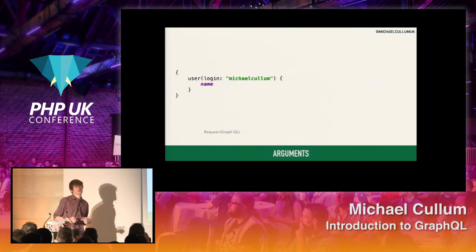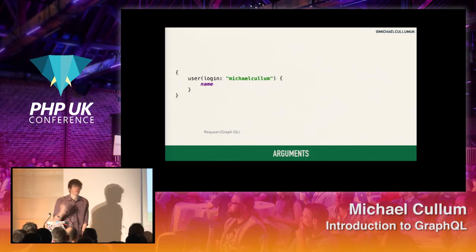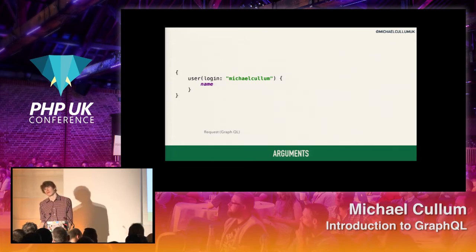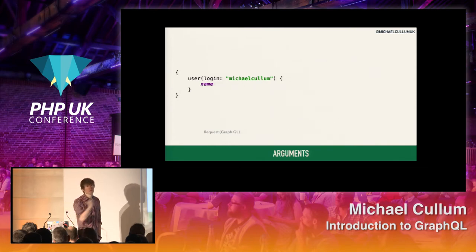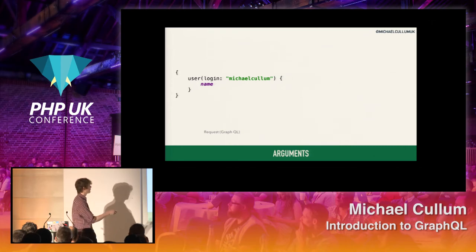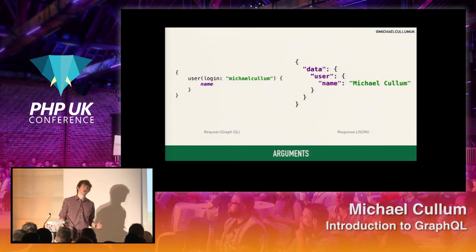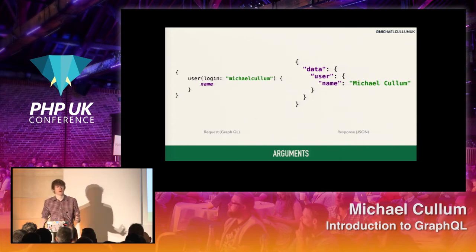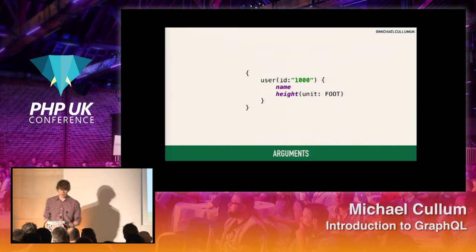What you just saw me do is I was passing in an argument. Essentially, what this actually is, is it's kind of like a function, if you consider that in PHP terminology. I'm passing in an argument and all arguments are named. This is not something we really have in PHP — you can't say which arguments you're giving. So I'm saying 'login', that's the variable name, that's the key, and then I'm saying that the value of that equals 'mycolumn'. Then I want to look at the name for that, and I get back exactly the same thing. This means I can say I only care about this one user rather than getting every single user on GitHub.